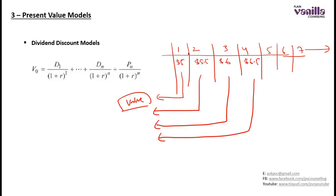The problem here is that we have only forecasted four years of dividends and calculated the present value of just four years — that is not enough. We need to estimate all the future dividends and then take their present value. If I am estimating all the future dividends, it might be 100, 200, or 1000 cash flows.